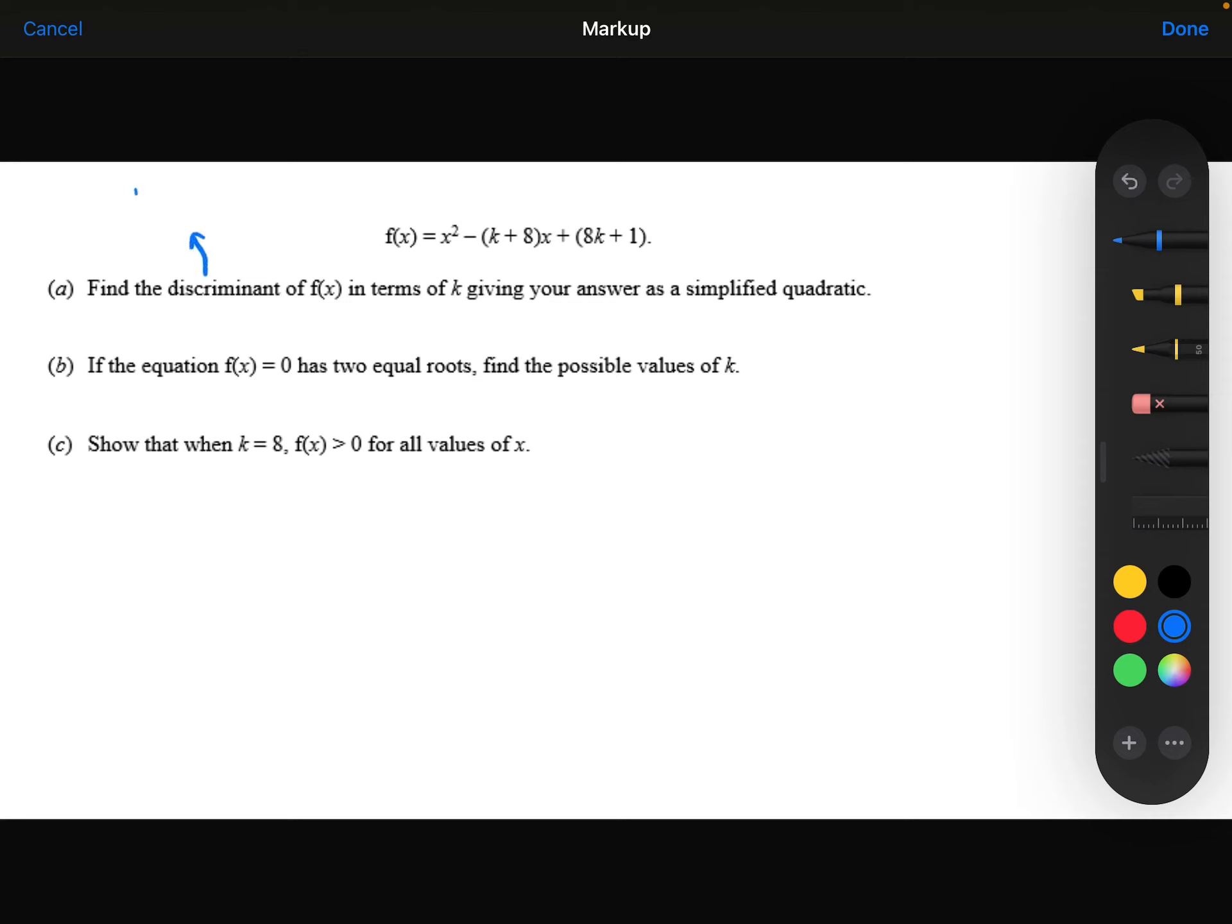So the discriminant is b squared minus 4ac. In this case, a is 1, b is -(k+8), and c is 8k+1.